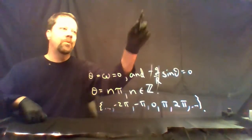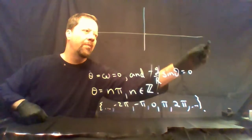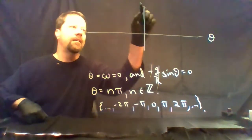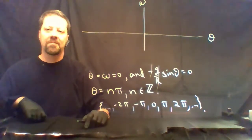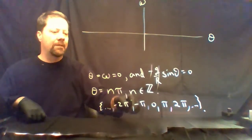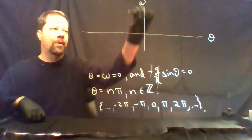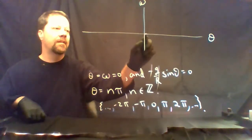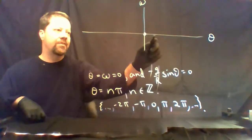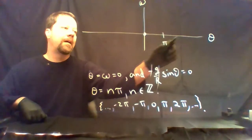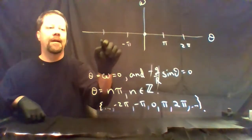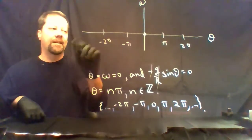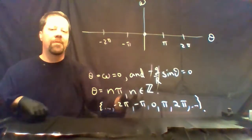To plot the equilibria, we put them on a theta-omega coordinate system. All of these equilibrium points have omega equal to zero. Theta takes the values 0, pi, 2pi, -pi, -2pi, and so on in both directions.